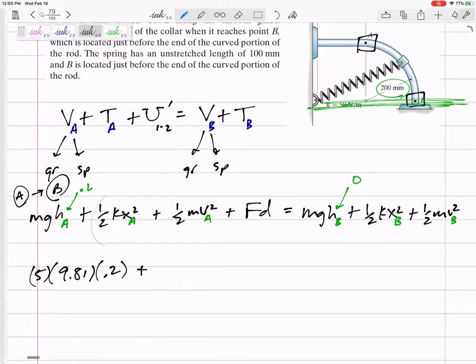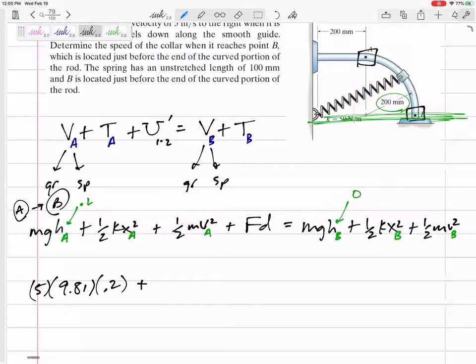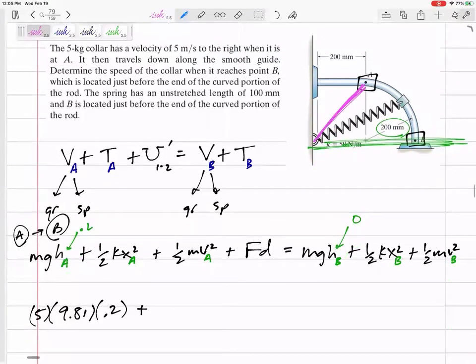Now 1⁄2 KX squared. When it's at A, what is the X? X is not the length of the spring, but the stretch of the spring. When it's at A, the spring would be that long, that length. What is that length? Well, it's a 200 by 200 rectangle, the hypotenuse.